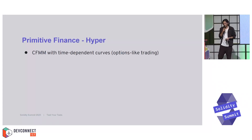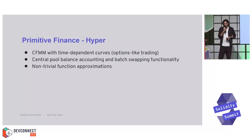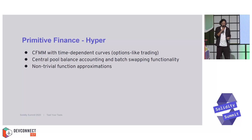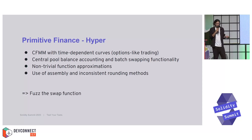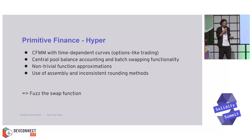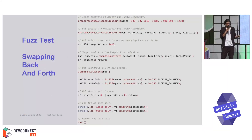This was an audit we conducted in January. It's a constant function market maker with time-dependent curves enabling options-like trading, with features such as central pool balance accounting and batch swapping functionality. It was using very non-trivial function approximations such as the Gaussian probability density function and inverse error correction function, making heavy use of assembly and inconsistent rounding methods. We decided to simply create a test that would fuzz the swap function, our initial idea being that inconsistent rounding could be exploited to extract tokens.